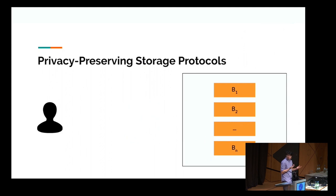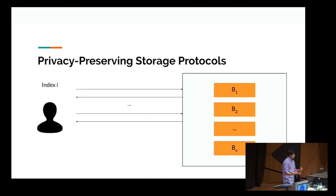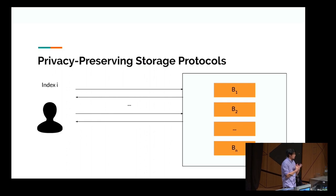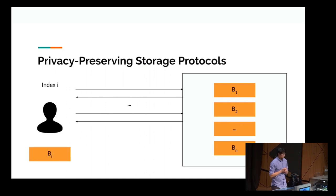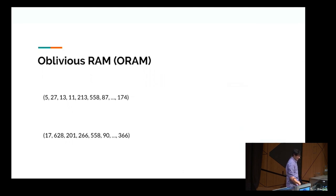So what do we really want? We want some sort of ideal protocol where the client says I want index i, it does a sequence of accesses in some random way, maybe the data is shuffled, it gets block i, and from the server's point of view it doesn't know what the requested index was. This is actually a problem that has a different name — it's called ORAM, or Oblivious RAM.